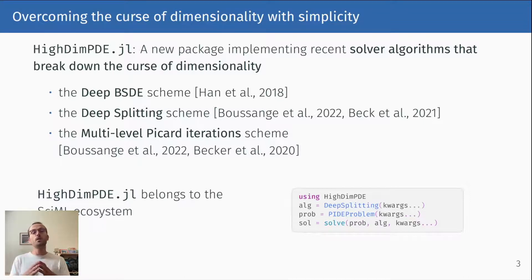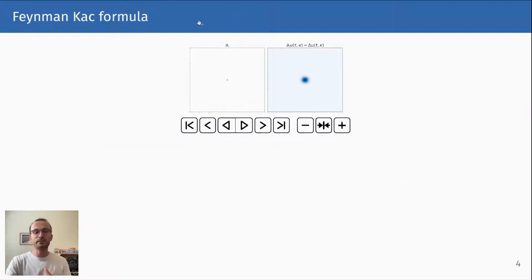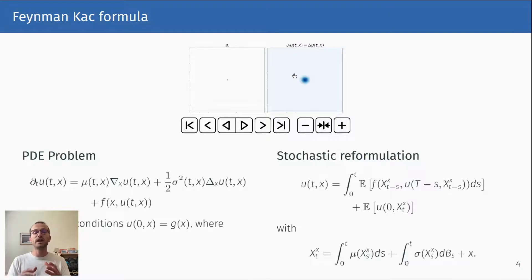The only thing you really need to know to use this package is the general principle upon which those schemes are based. Basically, all the schemes in HighDimPDE.jl rely on the equivalence between stochastic trajectories and partial differential equations. You might know that, for example, Brownian motions, the distribution of Brownian motions over time can be characterized by the heat equation. Essentially, there is a generalization of this equivalence which can be formulated as the Feynman-Kac formula.